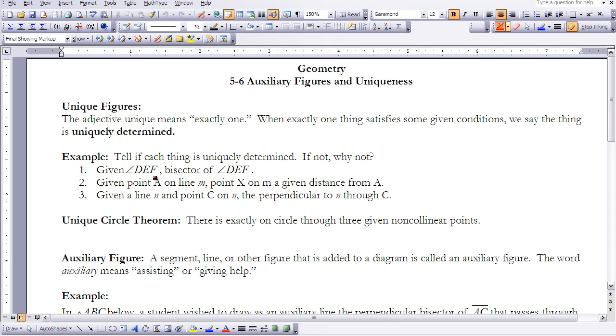Given angle DEF, the bisector of angle DEF. So if I have an angle DEF and I want to make a bisector, we know the bisector has to split the angle in half, exactly half. So there's only one place for that bisector to go through angle DEF in order to satisfy the statement. So that would mean that it is uniquely determined.